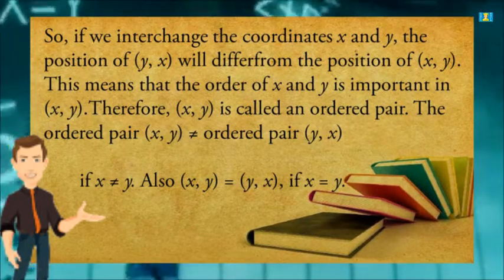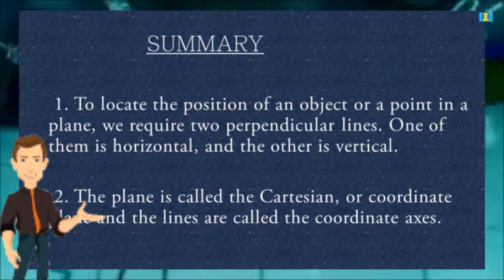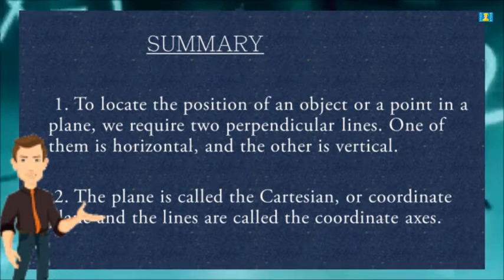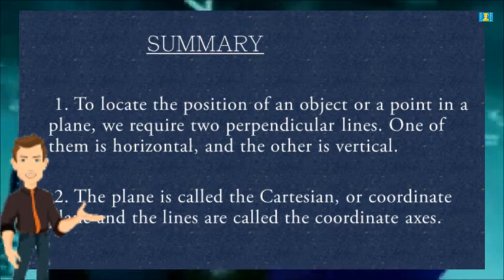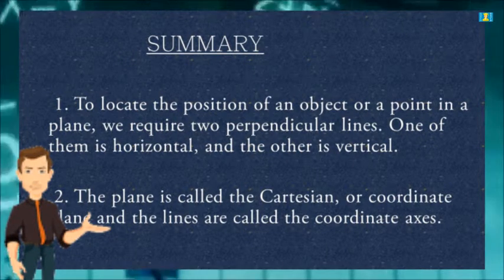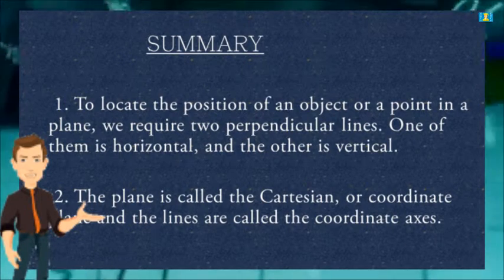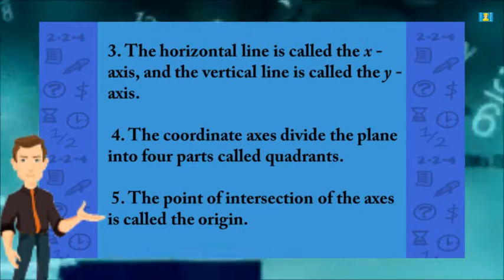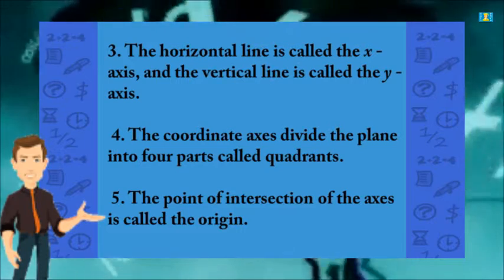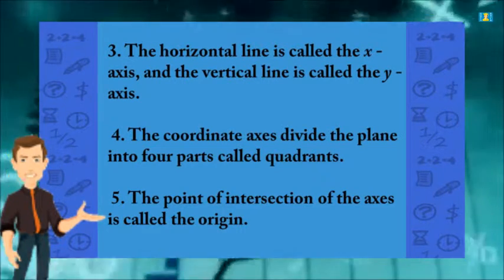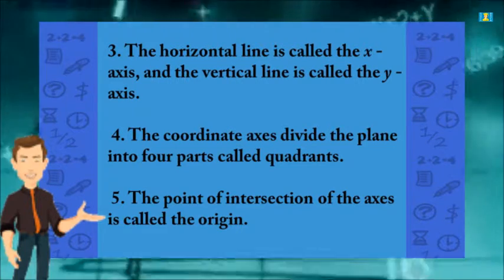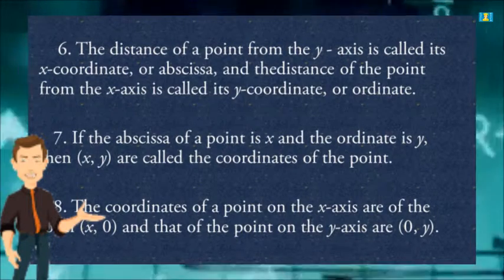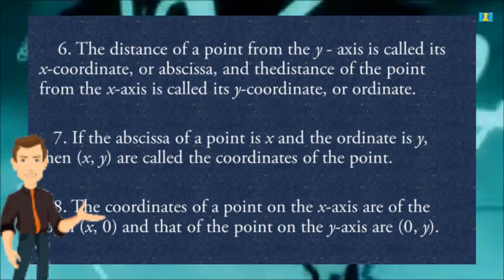Let us summarize: to locate the position of an object or a point in a plane, we require two perpendicular lines — one horizontal and one vertical. The plane is called the Cartesian or coordinate plane, and the lines are called the coordinate axes. The horizontal line is called the x-axis and the vertical line is called the y-axis. The coordinate axes divide the plane into four parts called quadrants. The point of intersection of the axes is called the origin. The distance of a point from the y-axis is called its x-coordinate or abscissa.